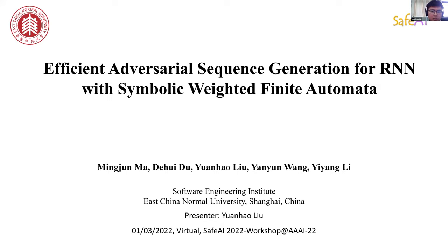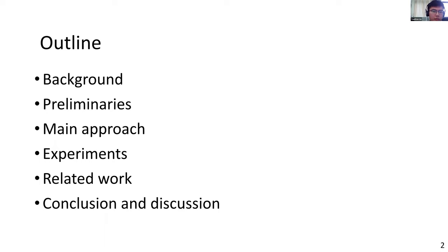Hello, everyone. This is Yuanhao Liu from East China Normal University. I'm pleased to present our paper on Efficient Adversarial Sequences Generation for RNN with Symbolic Weighted Finite Automata. This is our outline divided into six parts. We are building an efficient adversarial sequence generation approach, and adversarial sequences are more covertly generated by our approach. Experimental results show that our approach outperforms the state-of-the-art attack method.